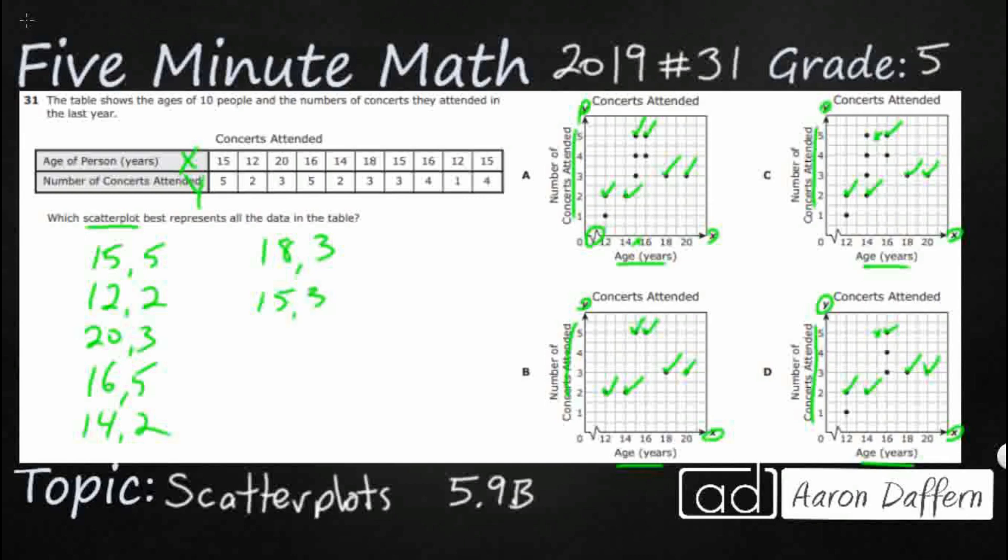15. I've already got a 15 right here. 15, 3 is good on A. 15, 3 just doesn't exist for B. 15, 3 also doesn't exist for C. And 15, 3 doesn't exist for D. All right. So it's looking like A. Let's just check the last few for A.